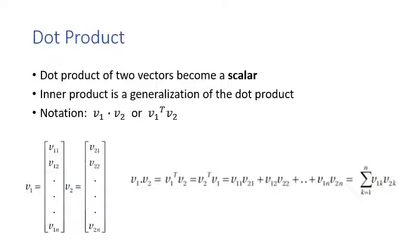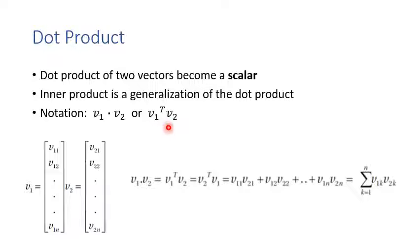After transposing, the number of rows and columns are switched. Transposing again returns to the original matrix A. Another important operation is the dot product. The dot product of two vectors produces a scalar — we can convert two vectors into a real number using the dot product. The dot product is sometimes called the inner product, though inner product is a generalization.